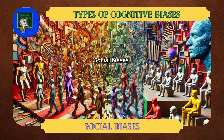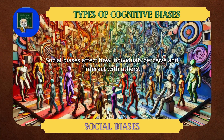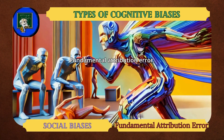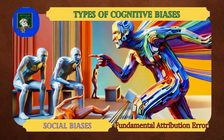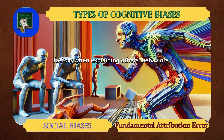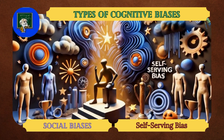Social biases affect how individuals perceive and interact with others. Fundamental Attribution Error: overemphasizing personality traits and underestimating situational factors when explaining others' behaviors. Self-serving Bias: attributing personal successes to internal factors.